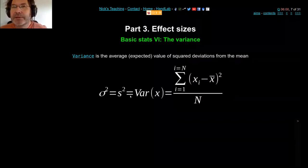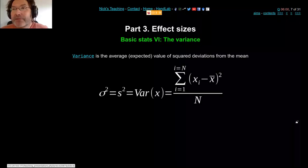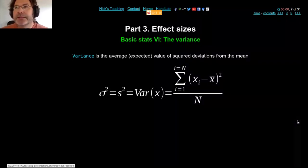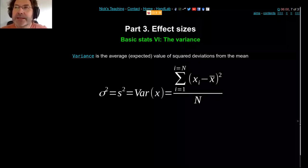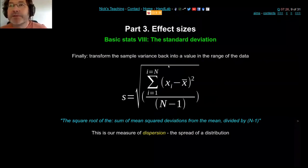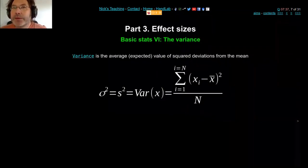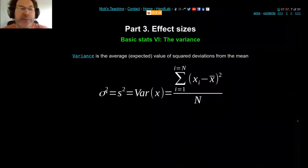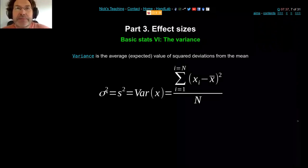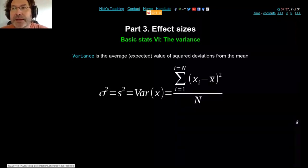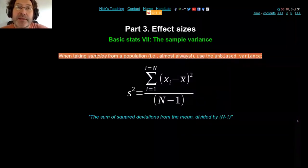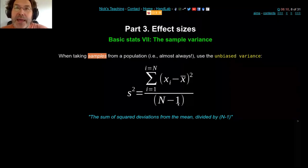The variance is used in pretty much every statistical calculation. It's like the average squared deviation from the mean, so the number no longer directly relates to your original data. If you take the square root, you get a number closer to the original values. When talking about the population standard deviation — the Greek sigma — you're assuming you have all the data in the universe, which is never true. So in almost all statistics, you divide by N minus one instead of N.